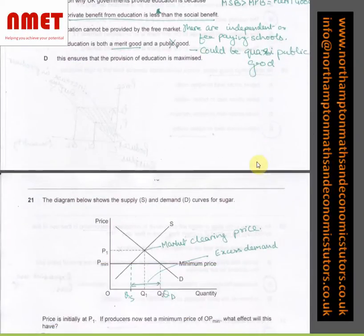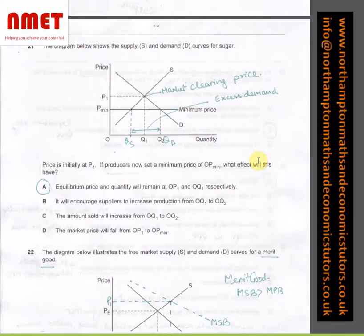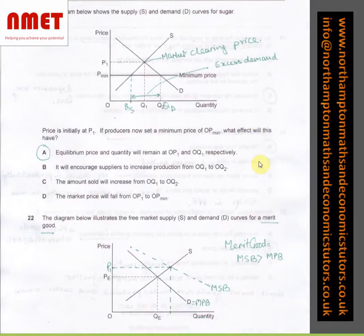Moving on to the diagram below shows the supply and demand curve for sugar. And I have said this is the market clearing price, P1. At P minimum, if that's the minimum price for the market, then we know this is the supply and that's the quantity demanded, which is the excess demand. However, let's have a look at what the question is asking.